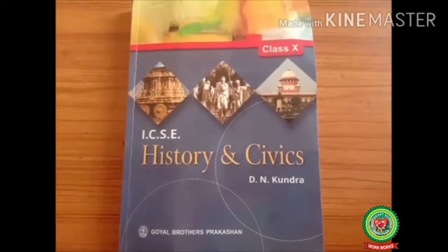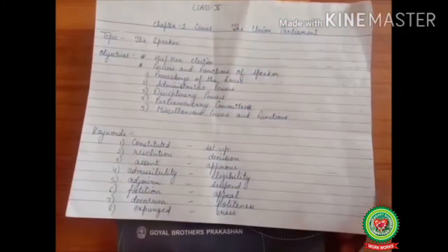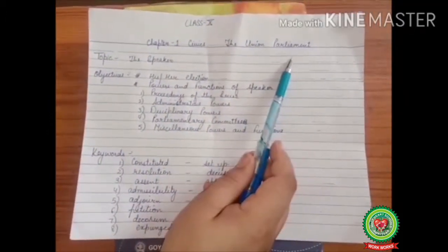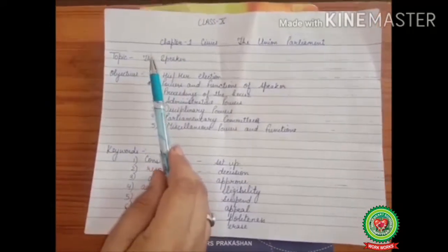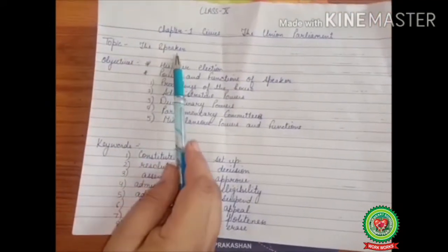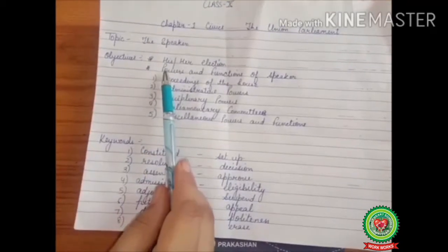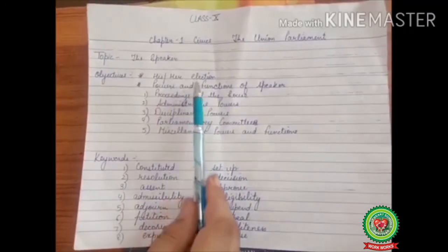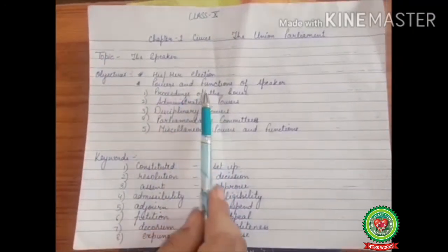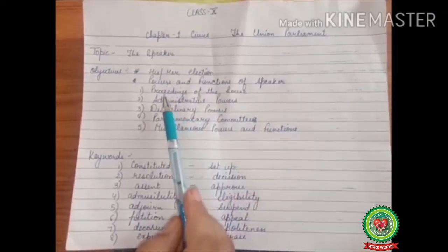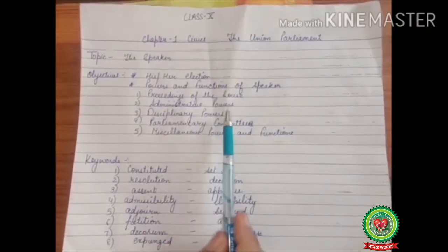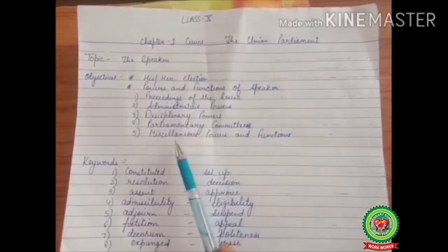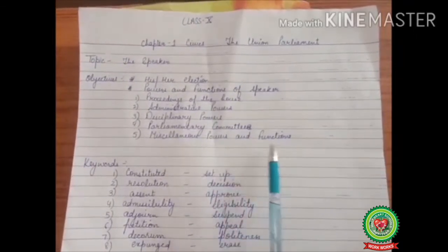Good morning students. Today we will continue with Chapter 1 of Civics, the Union Parliament. Today's topic is the Speaker. The objectives of today's topic are as follows: his or her election, powers and functions of the Speaker, proceedings of the house, administrative powers, disciplinary powers, parliamentary committees, and miscellaneous powers and functions.